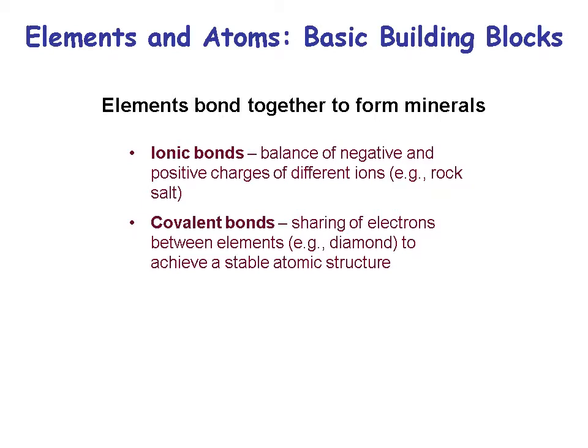You have ionic and covalent bonds. The strongest bonds are covalent bonds. Ionic bonds are a balance of negative and positive charges of different ions — rock salt is an example. A covalent bond is strong because it's a sharing of electrons between elements, and diamond is a good example of a really strong covalent bond with a very strong atomic structure.